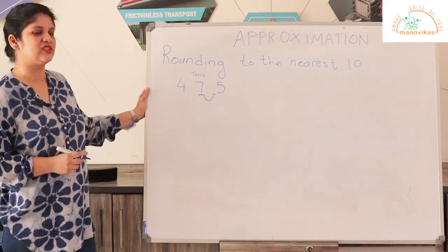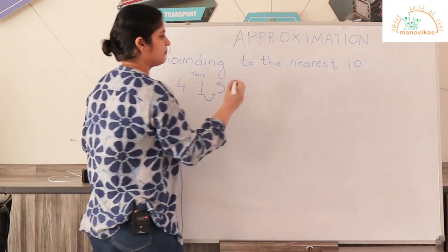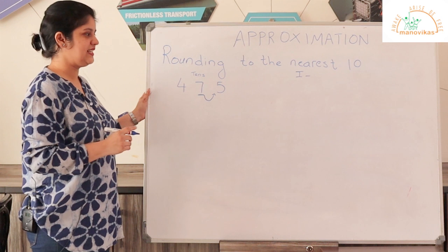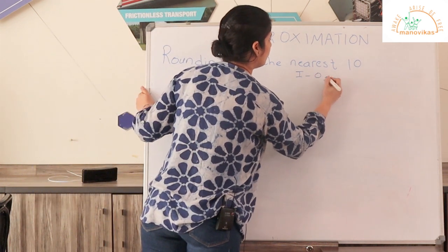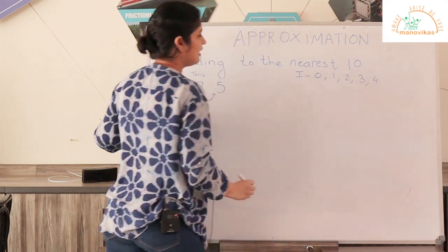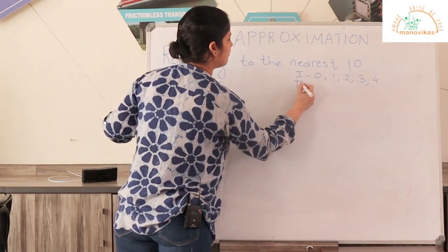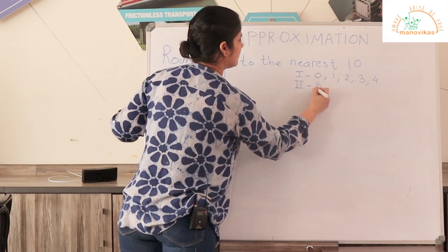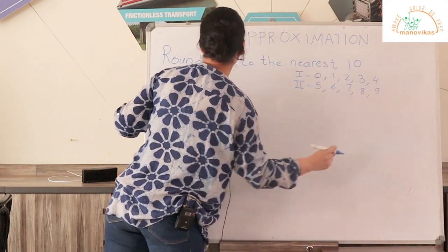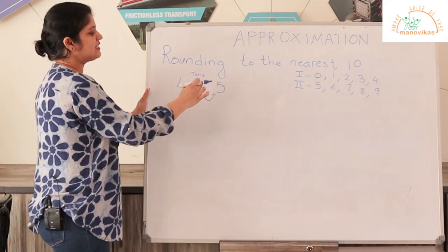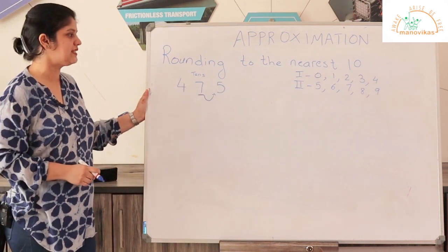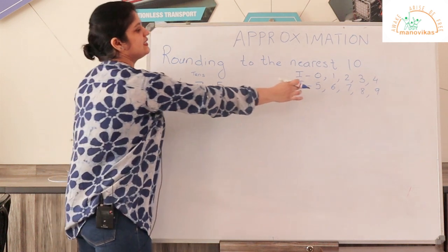To understand this, we need to create two ranges of numbers. The first range has numbers from 0 to 4, that is 0, 1, 2, 3, 4. The second range has numbers from 5 to 9, that is 5, 6, 7, 8, 9. Depending on which range this digit 5 falls in, the 7 will either change or remain the same. 5 lies in the second range.